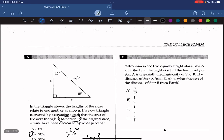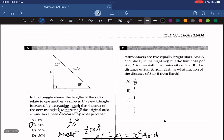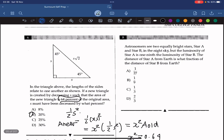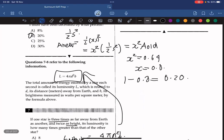Let's go into the last question. Astronomers see two equally bright stars, star A and B, in the night sky. But the luminosity of star A is one-ninth of the luminosity of star B. The distance of star A from Earth is what fraction of the distance of star B from Earth? So we can write this equation as L star A equals 1 over 9 LB.